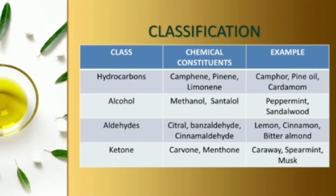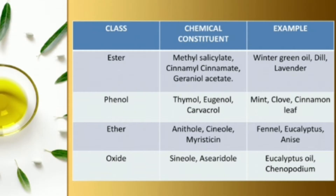The first category is hydrocarbons, present in camphor and cardamom. Next is alcohols, present highly in sandalwood. Aldehydes are present in lemon, cinnamon bark, and bitter almond. Ketones are present in caraway, spearmint, and musk. Esters are present in lavender and wintergreen oil. Phenols are present in mint and cinnamon leaf — notably, cinnamon leaf contains phenol while cinnamon bark contains aldehyde. Ethers are present in fennel and eucalyptus. Oxides are present in eucalyptus oil and chenopodium.